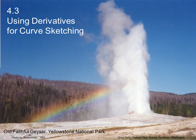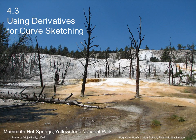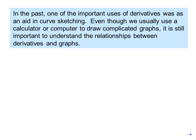Lecture 4.3: Using Derivatives for Curve Sketching. This is Old Faithful Geyser in Yellowstone National Park — this photo was taken in 1995, and as you can see from all the dead trees in the background, there was a forest fire the year before. This is Yellowstone Falls and Mammoth Hot Springs, also in Yellowstone National Park.